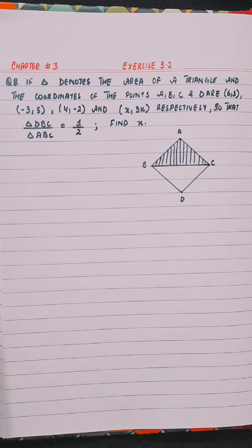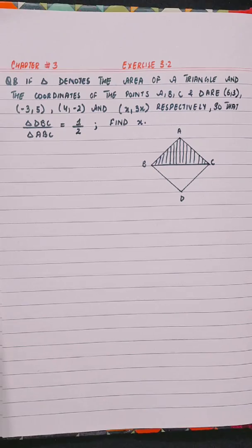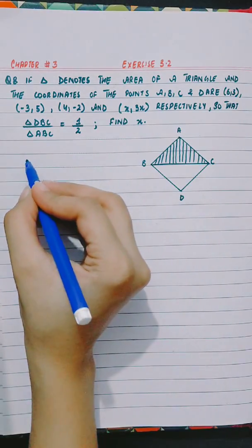so that area of triangle DBC divided by area of triangle ABC is equal to half, find x.